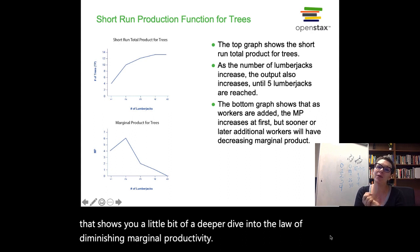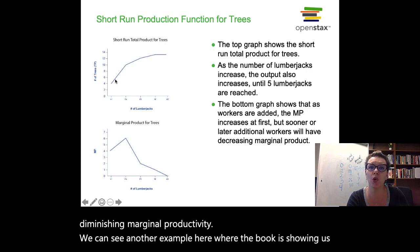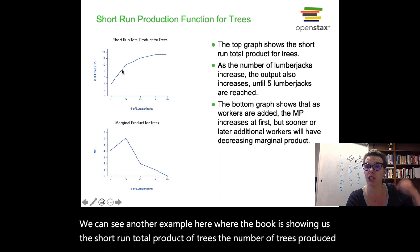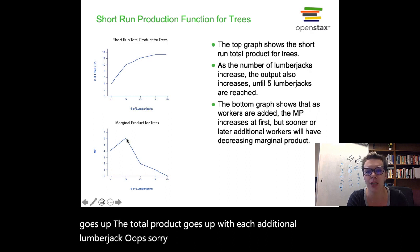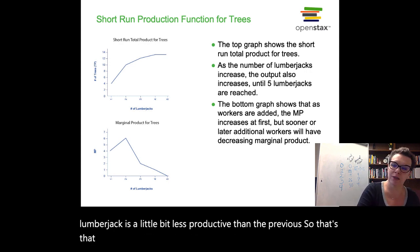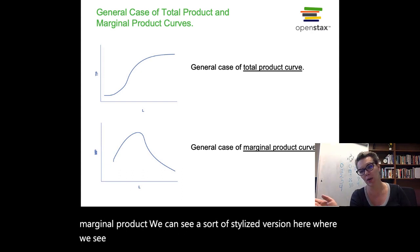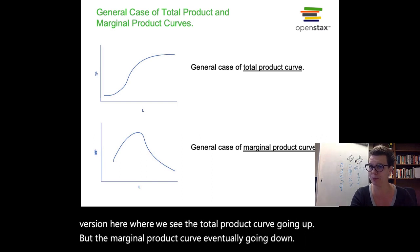We can see another example here where the book shows us the short-run total product of trees. The total product goes up with each additional lumberjack, but on the margin, each additional lumberjack is a little bit less productive than the previous — that's the diminishing marginal product. We can see a stylized version where the total product curve goes up but the marginal product curve eventually goes down.